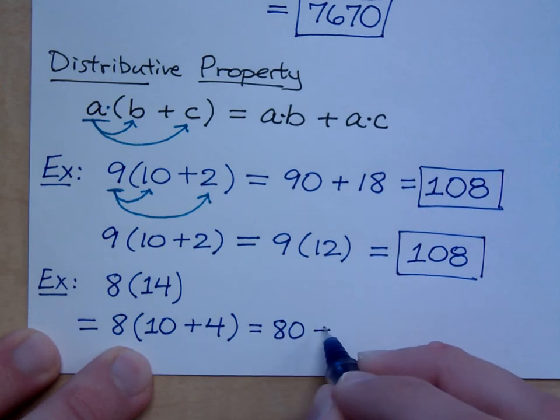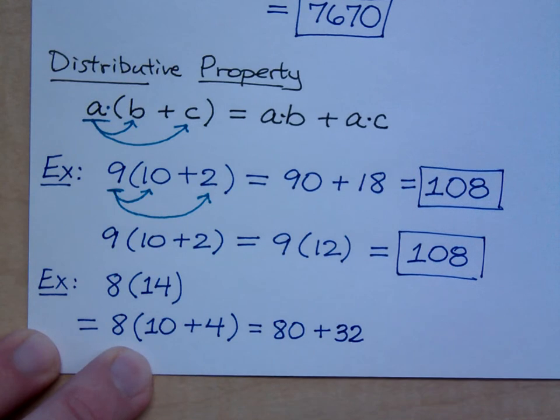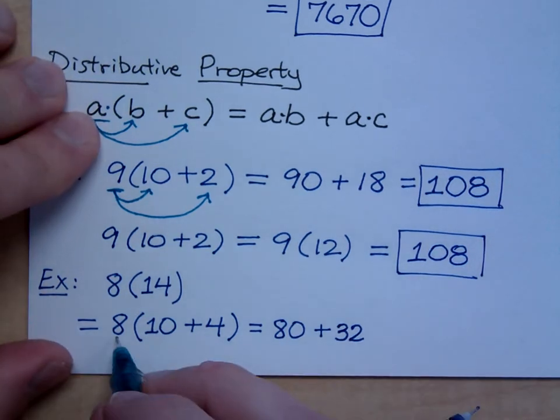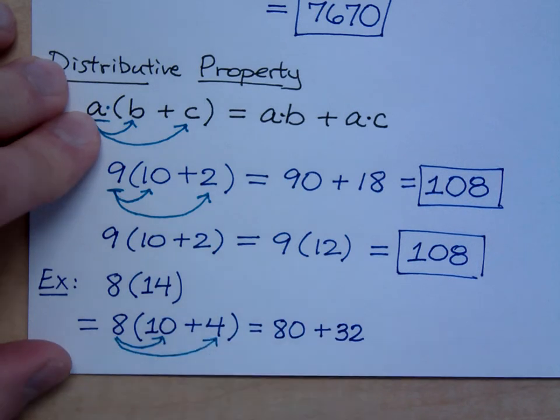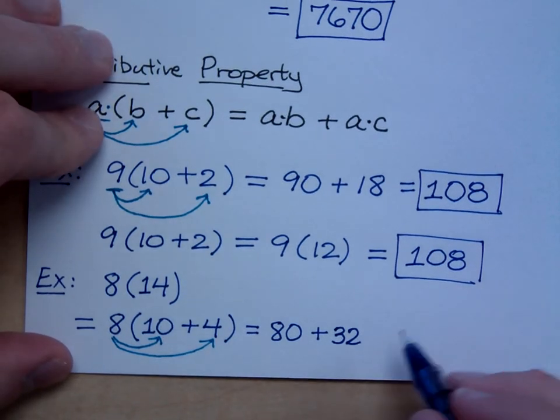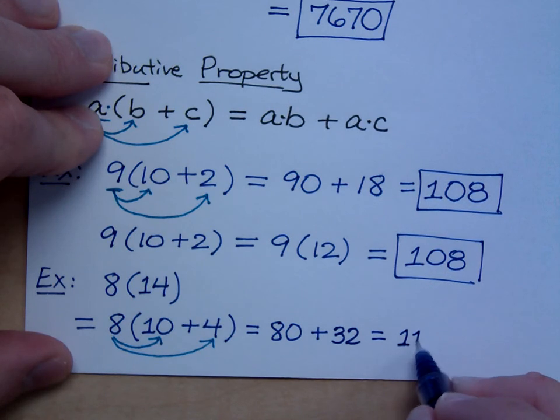I get 80 plus what? 80 plus 32. Right? 8 times 4 is... 8 times 10 is 80. 8 times 4 is 32. And then what's 80 plus 32? Because I'm adding, and I've got a number that ends in 0, so that should be easy enough. What is the answer? Answer is 112.